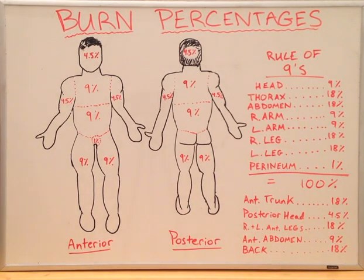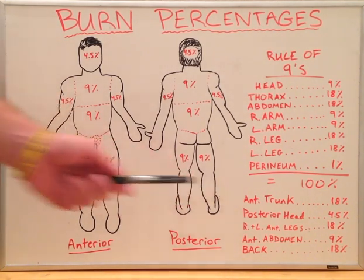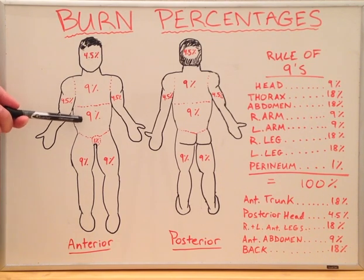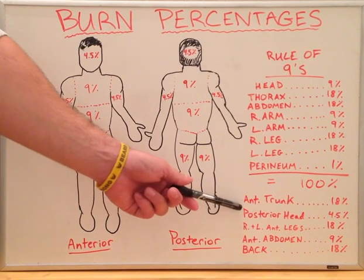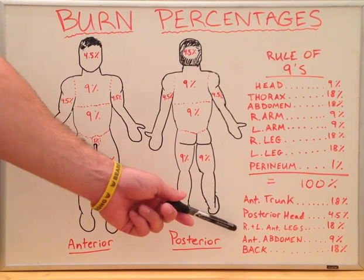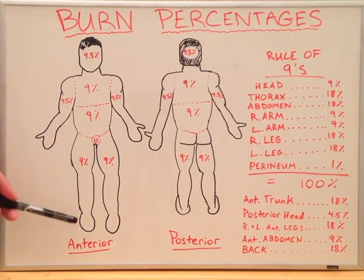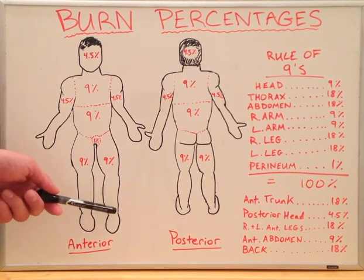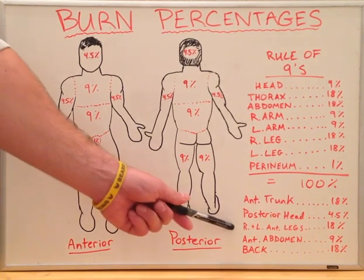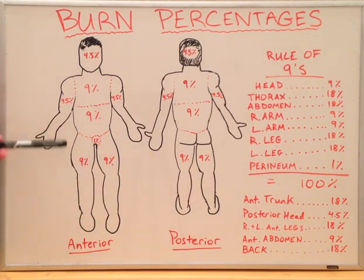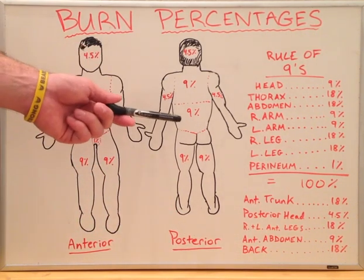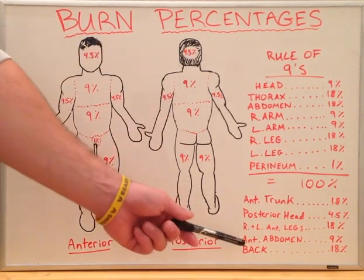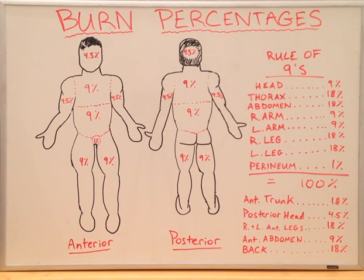If you add all these up, we come to a total of 100%. For scenarios that aren't as clean-cut: just the anterior trunk — including both the anterior thorax and anterior abdomen — makes 18%. Just the posterior head is 4.5%. The right and left anterior legs combined give 9 plus 9 equals 18%. Just the anterior abdomen alone is 9%. And the back — including the posterior thorax and posterior abdomen — gives 18%. These are the basics of burn percentages.